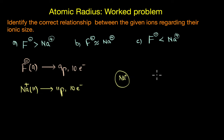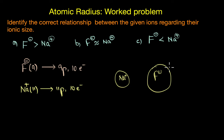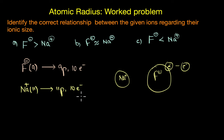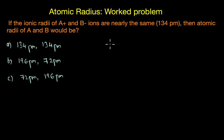Even though Na+ and F- are isoelectronic, Na+ has more protons, so its electrons experience greater nuclear attraction, making Na+ smaller. From another perspective, when fluorine gains an extra electron to become F-, there is extra electron-electron repulsion, which pushes the electrons further apart, causing the electron cloud to expand. Anions are therefore larger. Na+ has lost an electron and experiences less electron-electron repulsion. The correct relationship is F- > Na+.